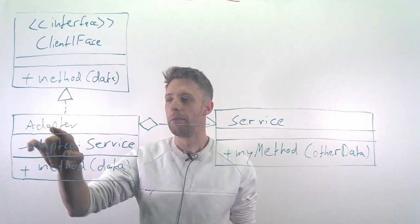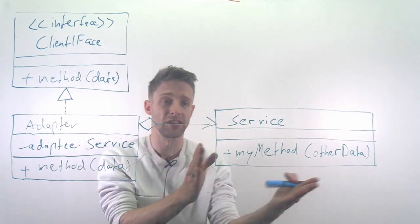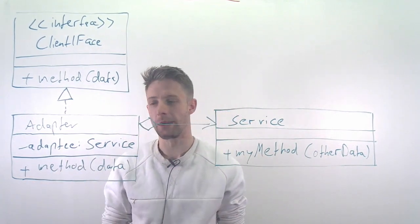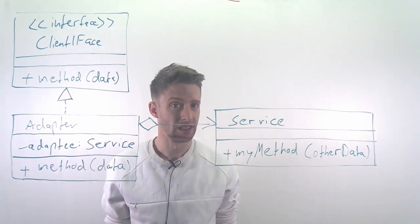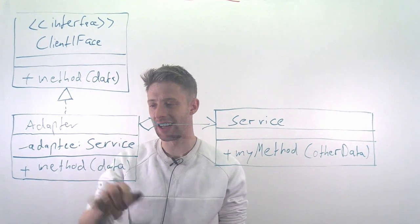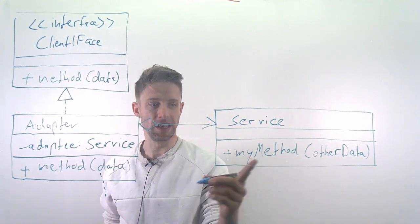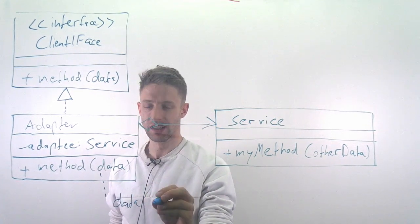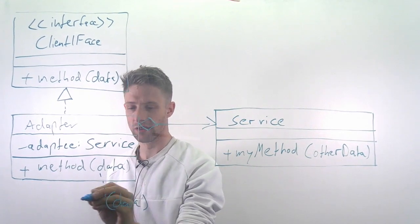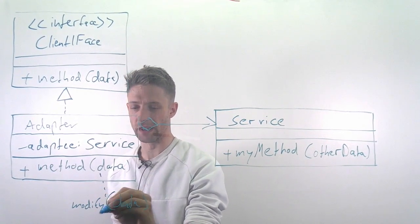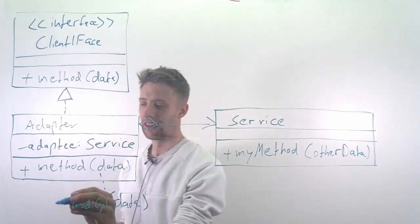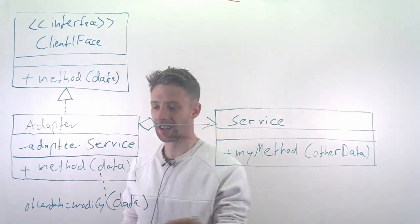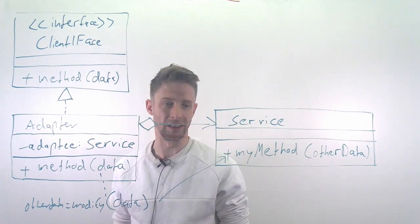The idea is actually quite simple: you have an adapter that implements the client's interface, meaning it has the method the client can call, but it also has a connection to an adaptee — your service. In the concrete implementation of this method, you simply convert the data. For example, if it needs to be a list instead of an array, you do: other_data = modify(this).